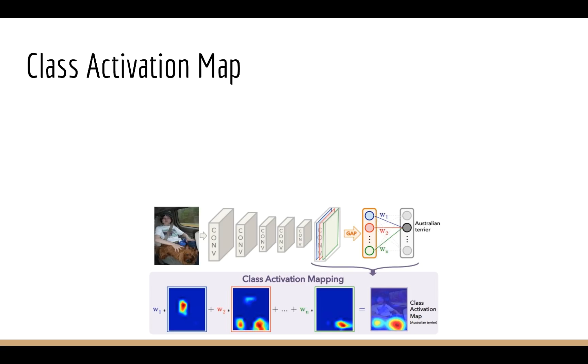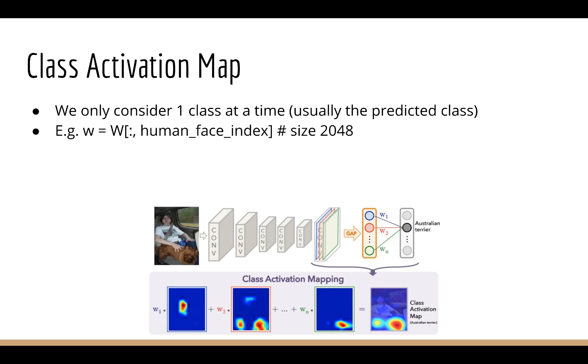Importantly, we only consider one class at a time when we build a class activation map, usually for the predicted class. So for example, if we predict human face, then we would grab the column of weights that correspond to the class human face. Now, just before we do the max pool, we have a 7x7 image and there are 2048 individual images. So all we have to do is weight the importance of each image by multiplying them by the logistic regression weights.